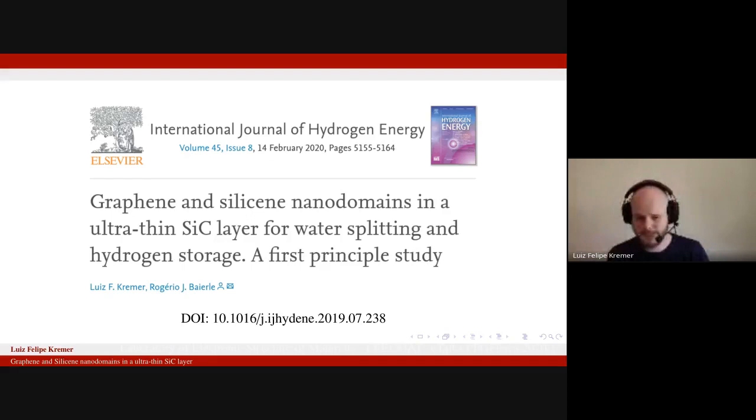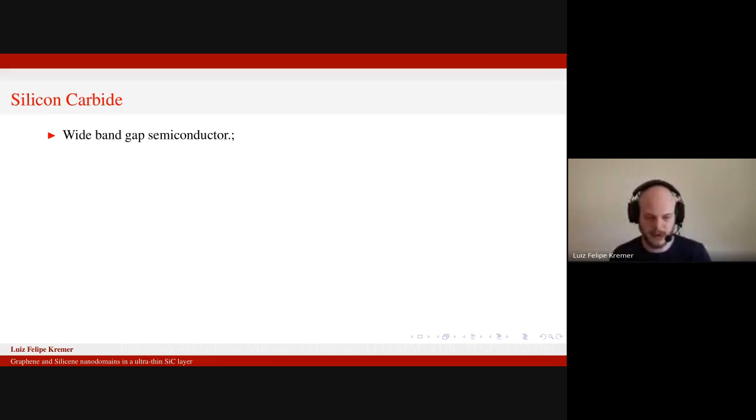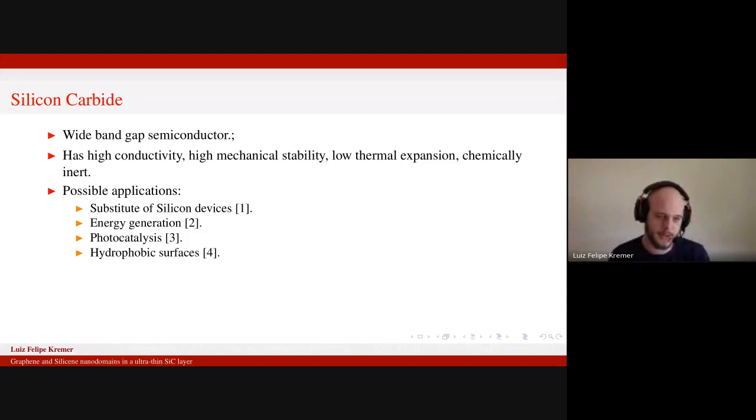So why silicon carbide? Well, silicon carbide is a wideband gap semiconductor. It has interesting physical properties like high conductivity, high mechanical stability, low thermal expansion, and it's chemically inert. Possible applications include substitute of silicon devices, energy generation, photocatalysis, and also hydrophobic surfaces.